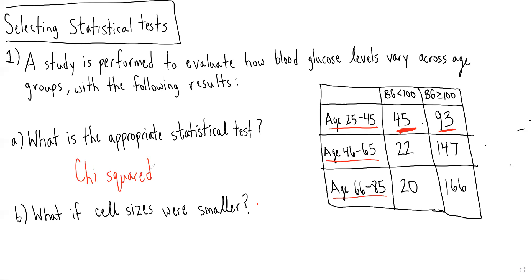Part B, the question asks, what if the cell sizes were smaller? For example, let's say this was two, and this one was four, and this one was three or something.